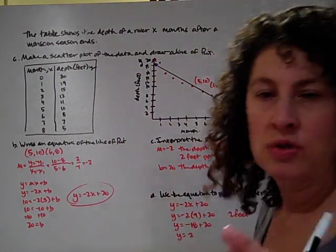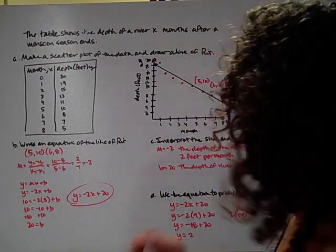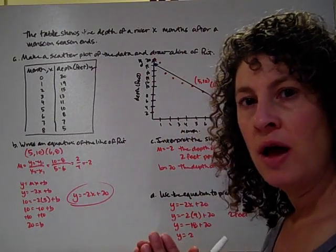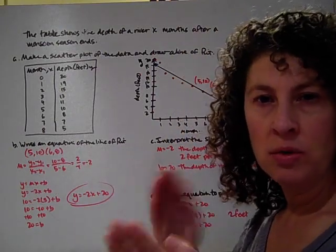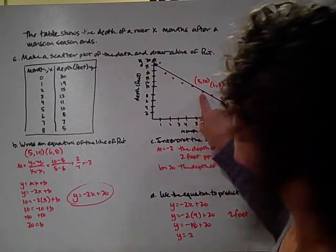Now what I want to do is I want to try to remember those three things. I want a line that goes exactly through two points. I want it to follow the flow of the data. And I want to try to have the extra points spread equally amongst the two sides of my line. So I chose to put my line through five, ten, and six, eight.